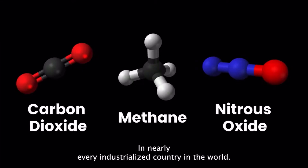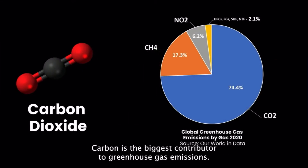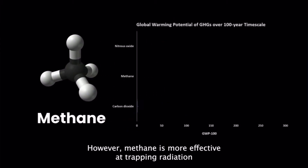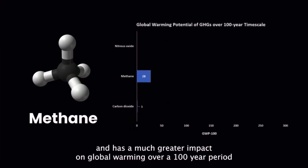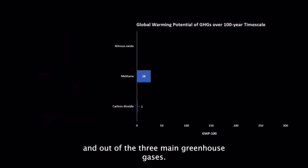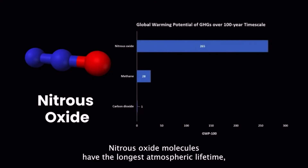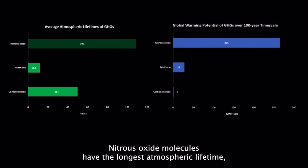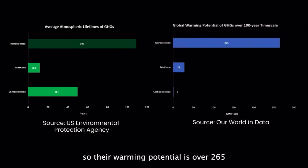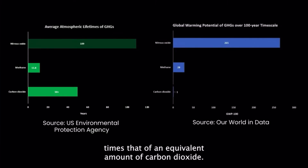In nearly every industrialized country in the world, carbon is the biggest contributor to greenhouse gas emissions. However, methane is more effective at trapping radiation and has a much greater impact on global warming over a 100-year period. And out of the three main greenhouse gases, carbon dioxide molecules have the longest atmospheric lifetime, so their warming potential is over 265 times that of an equivalent amount of carbon dioxide.